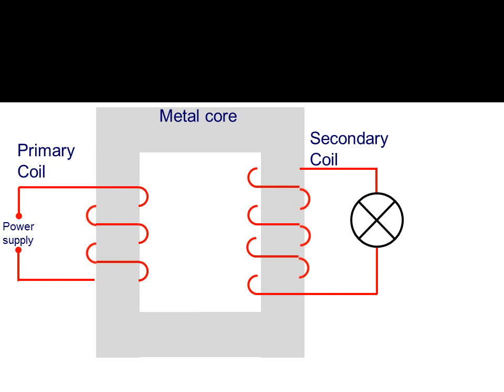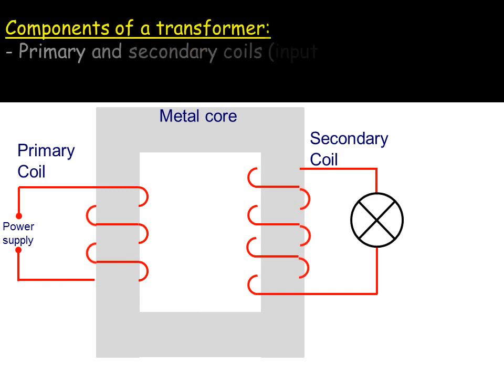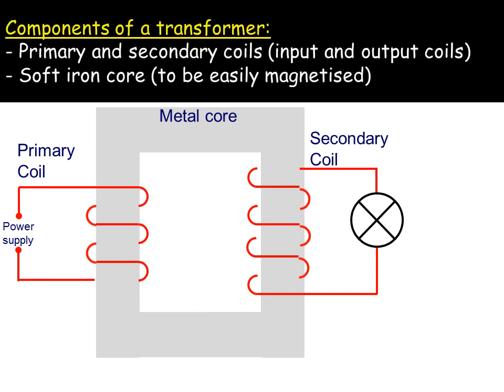The first bit is to really consider what the transformers are made of and these are the two main components. They have a primary and secondary coil, so the wires are wrapped around either side, and an iron core. It's usually soft iron, it has to be easily magnetized and soft iron allows the magnetic field to set up and change very easily.